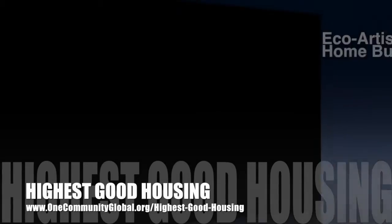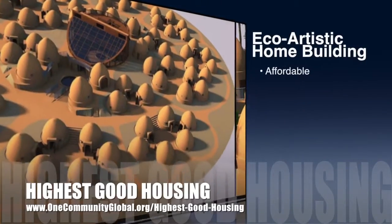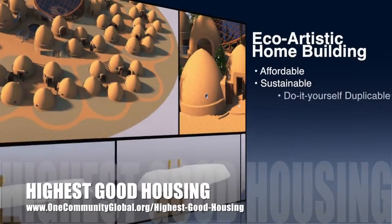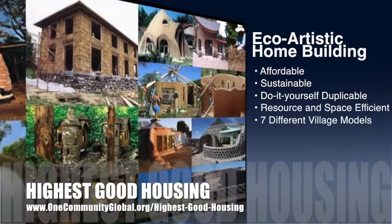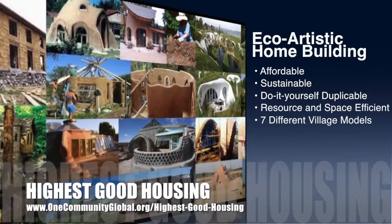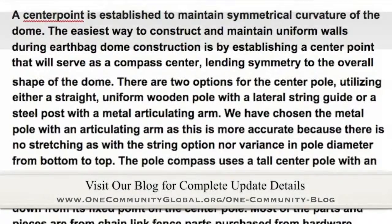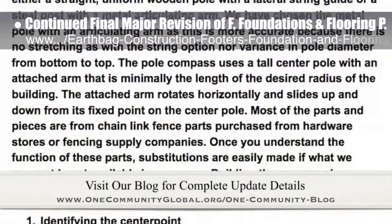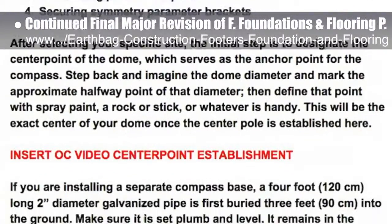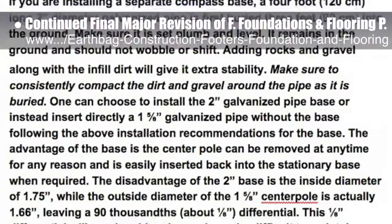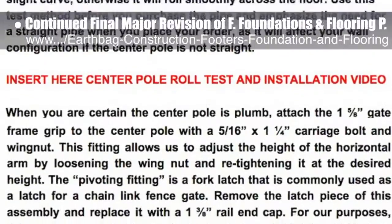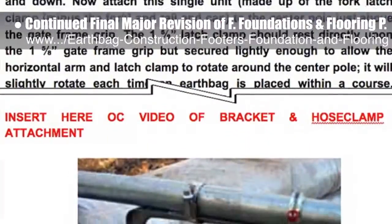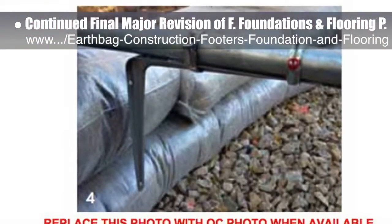OneCommunity's approach to Highest Good Housing is eco-artistic home building that is affordable, sustainable, do-it-yourself duplicable, resource and space efficient, and consists of seven different sustainably constructed village models. This last week, the core team continued what we hope will be the final major revision of the footers, foundation, and flooring page for the upcoming crowdfunding campaign. This included researching and determining compass specifics for steel lengths and diameters, steel gauge, and a couple trips to Home Depot and Lowe's to piece it together and test it with chain link parts. We'd say we're about 12% complete with this final revision behind the scenes.